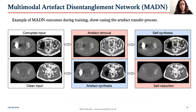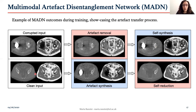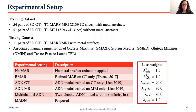For the sake of illustration, in this slide you can see the process of artifact transfer at training. The corrupted input first undergoes artifact removal and the same artifact is re-added back through self-synthesis. On the clean pathway, the artifact encoded from the corrupted image is transferred to the clean image through artifact synthesis and is subsequently removed in the self-reduction. The approach was trained on 2D slices from 105 CT and MRI 3D pairs, of which 54 were corrupted by metal artifacts and 51 were not. The testing set included 11 pairs with metal artifact, associated with manual segmentation of four muscles close to the implant; in particular, gluteus minimus was the closest muscle.